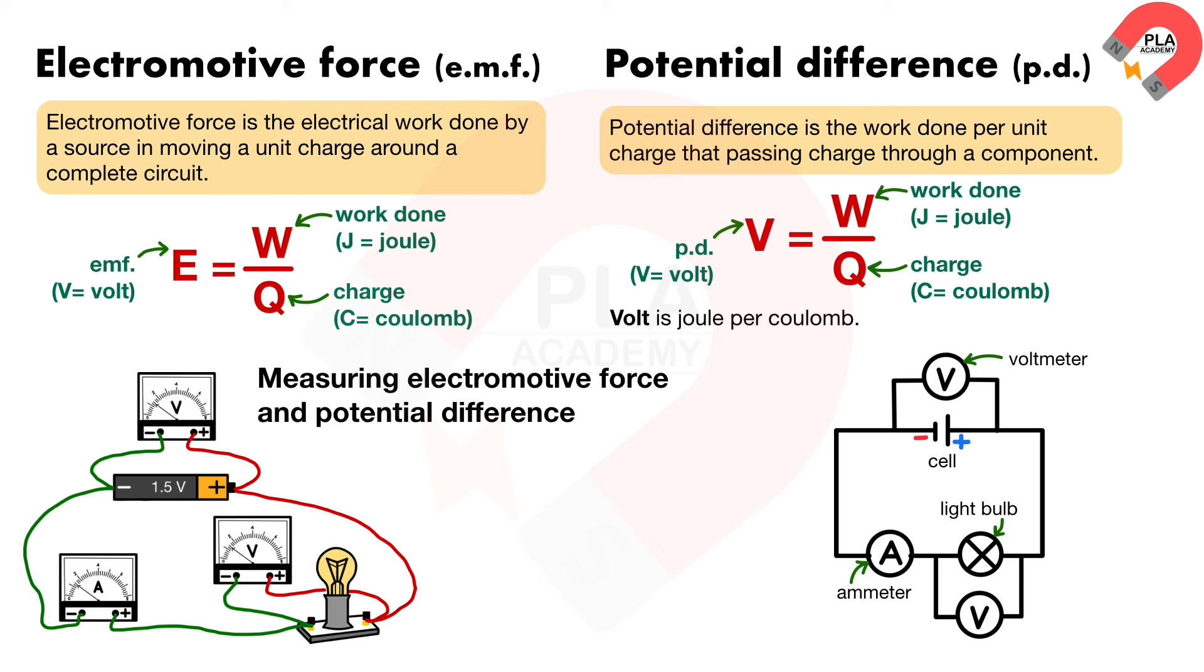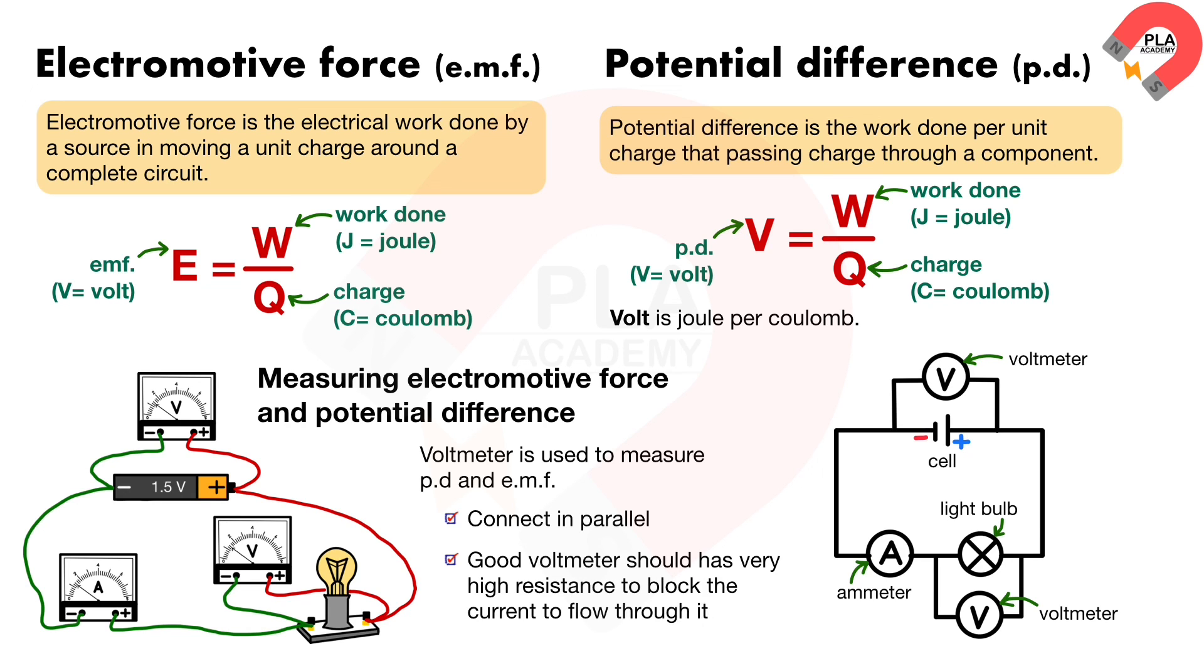This is a voltmeter, which are two types as digital and analog. It is used to measure the electromotive force across a cell. This is also a voltmeter. It is used to measure the potential difference across a light bulb. Therefore the voltmeter is used to measure the PD and EMF. They must connect in parallel to a cell and a light bulb. Good voltmeter should have very high resistance to block the current to flow through it.